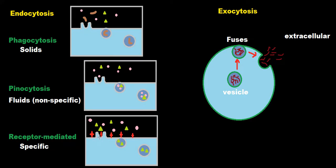Receptor-mediated endocytosis is a bit different. There are receptors on the outside of the plasma membrane that can detect certain specific molecules. In this case, we're attracting only the triangle-shaped molecules. Those receptors attract the triangles, pull them inward, and envelope them. So with receptor-mediated endocytosis, we're never going to get the brown solids or the little pink dots — we're only going to pick up those green triangles.